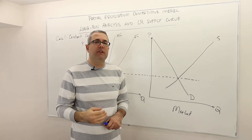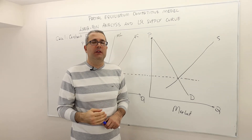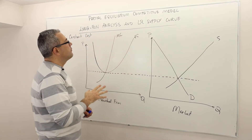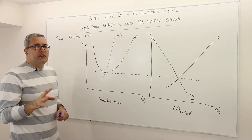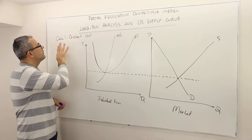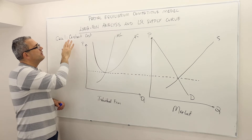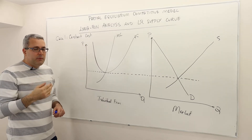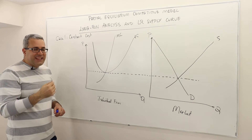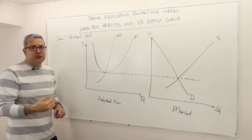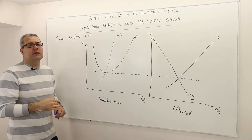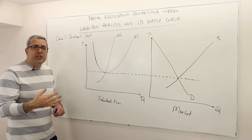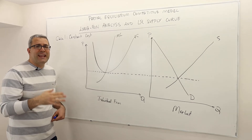Let's talk about how we derive the long-run supply curve. We will analyze three separate cases. The first case is constant cost. What do we mean by this? We mean that as new firms enter this market, the input prices are not going to change — they're going to stay the same.